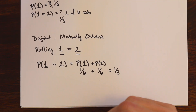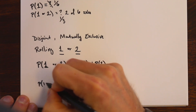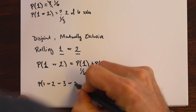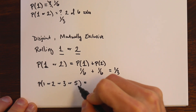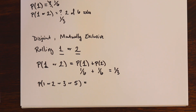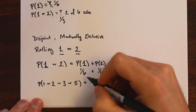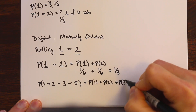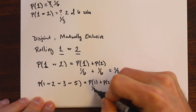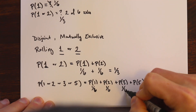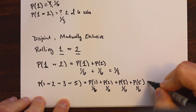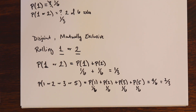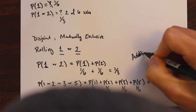We can also do this for more sides. Let's say we wanted the probability of a 1 or a 2 or a 3 or a 5. Since each of these different outcomes is mutually exclusive — they can't happen at the same time — we can say this probability is probability of 1 plus probability of 2 plus probability of 3 plus probability of 5. Each of these is 1 sixth, so we get 4 sixths, or 2 thirds. We're using what's called the addition rule for disjoint events.